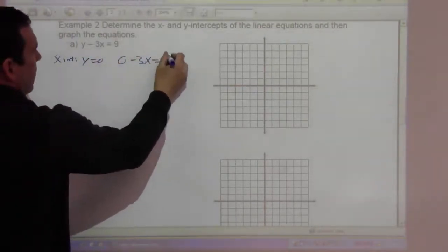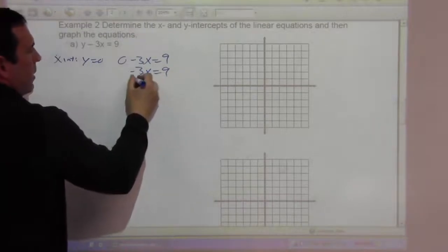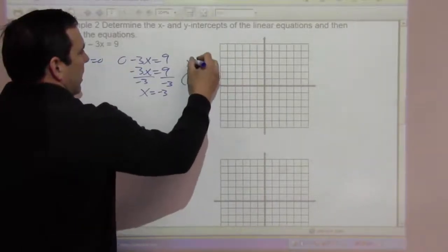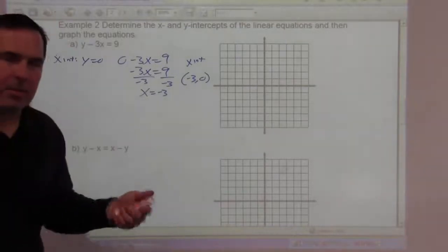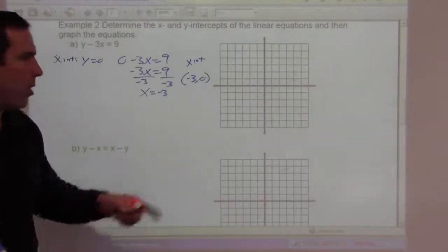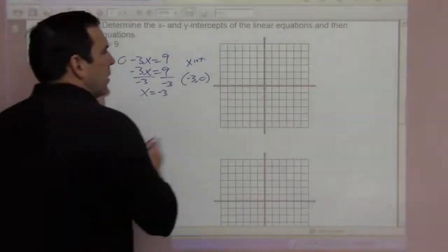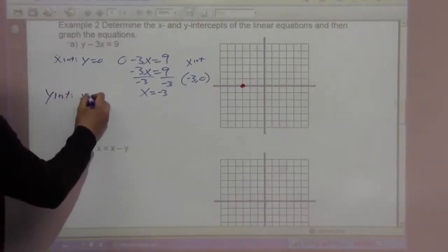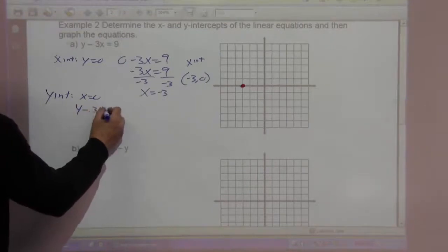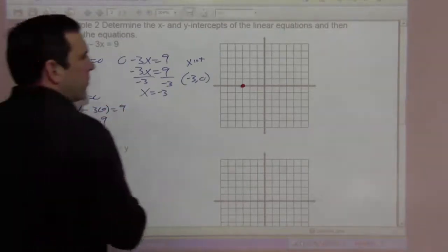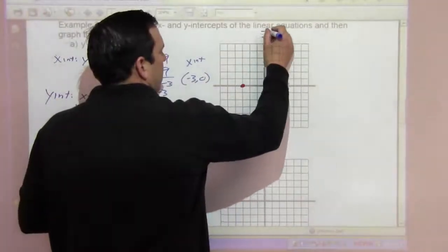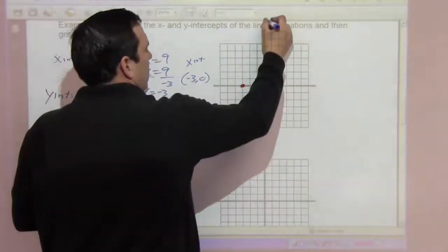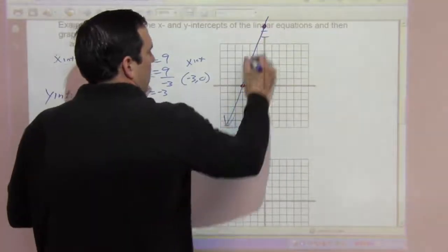0 minus 3x equals 9. Negative 3x is 9. Divide by negative 3, x is negative 3. So we have the point negative 3 comma 0. This is the x-intercept. For the y-intercept, x equals 0. So y minus 3 times 0 equals 9, y equals 9. And there's our line.